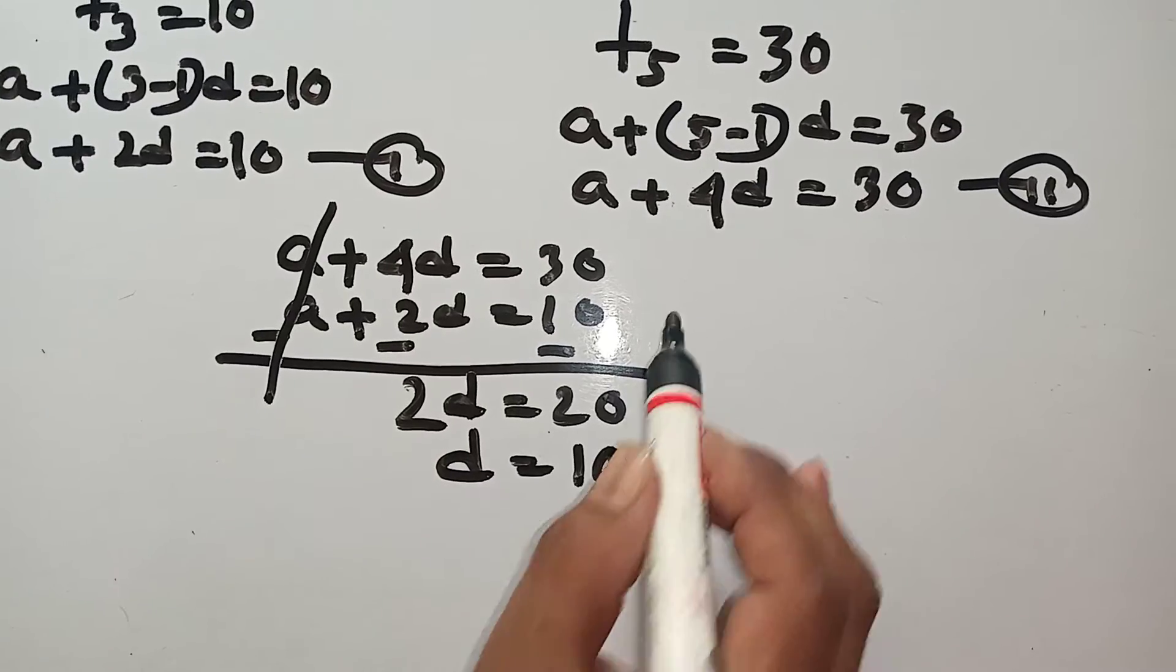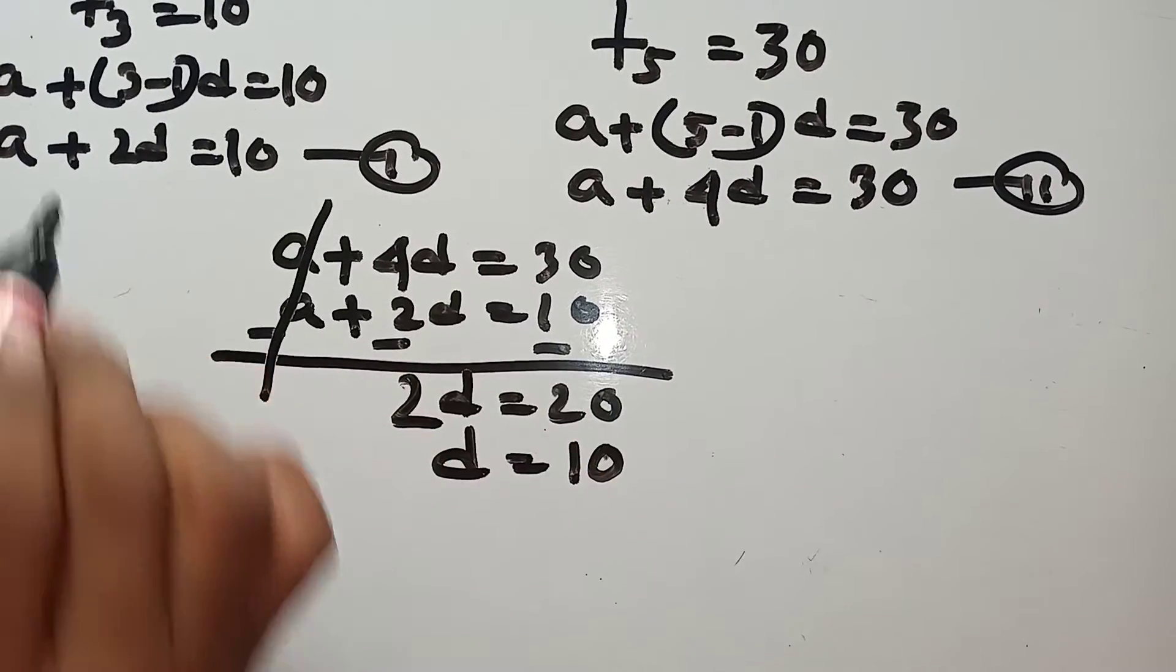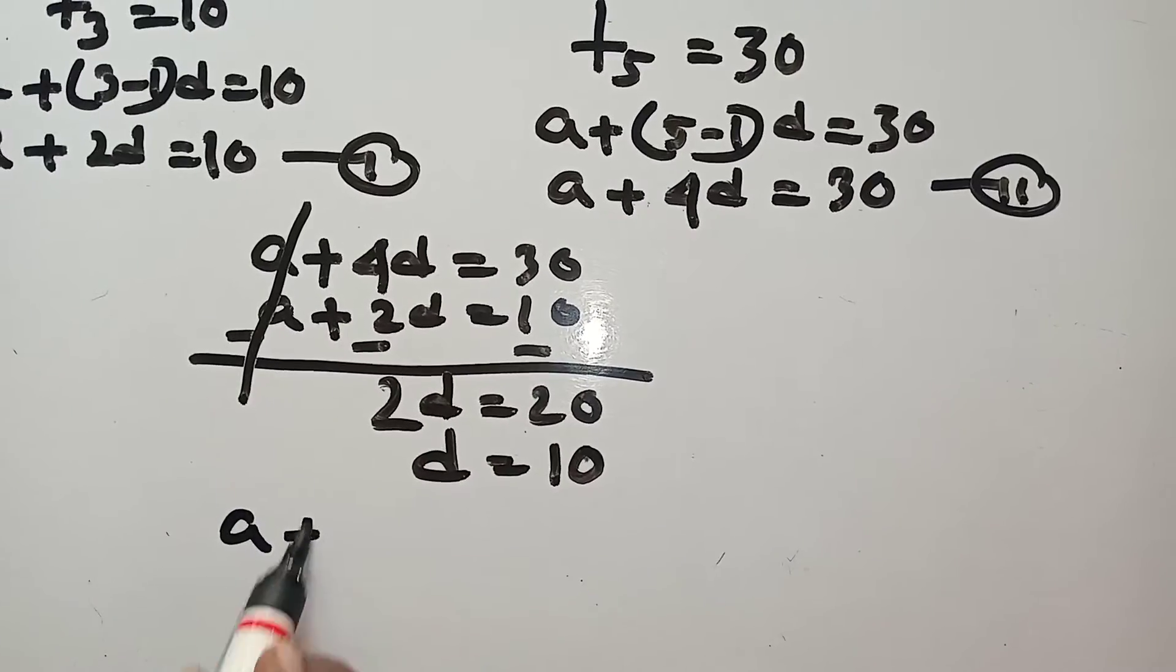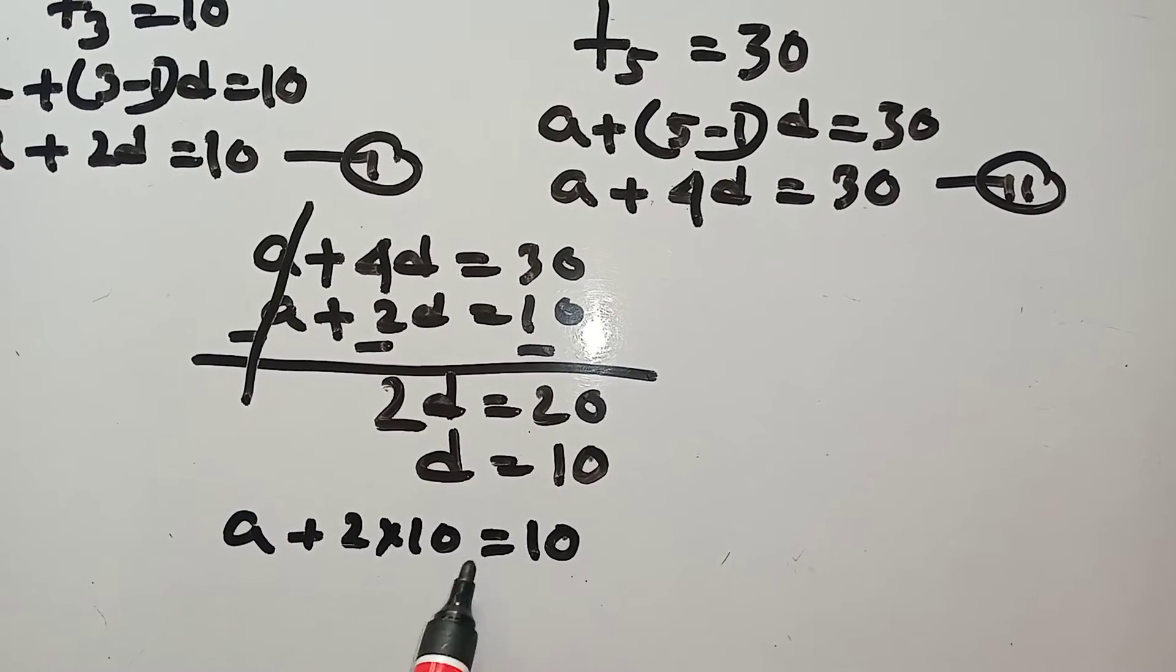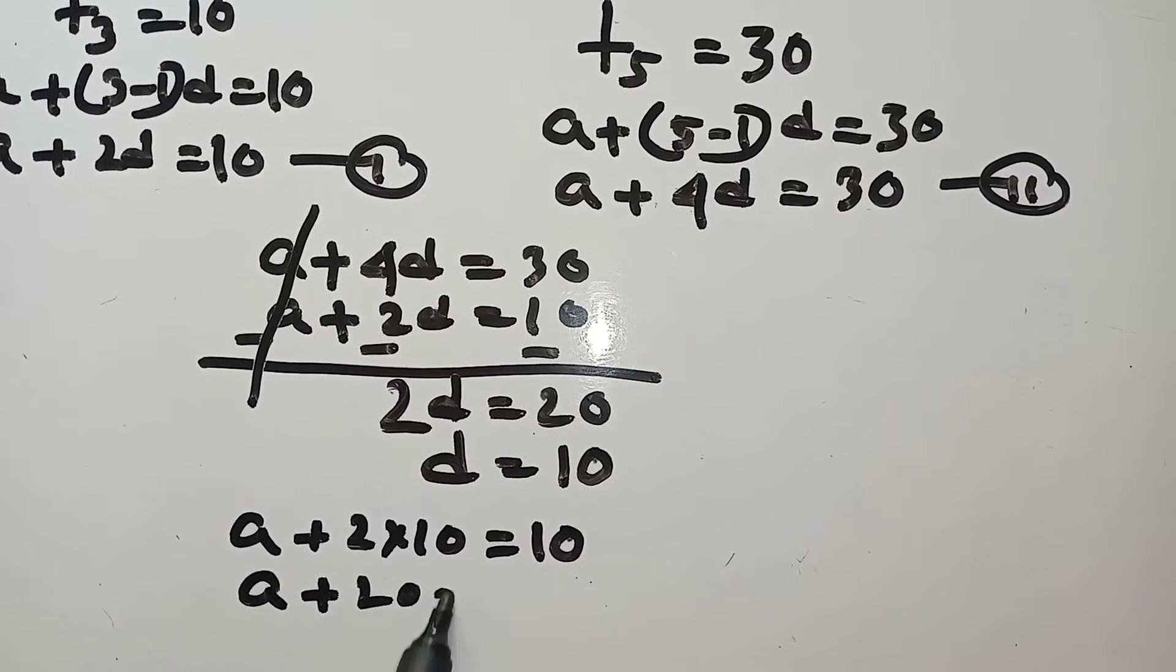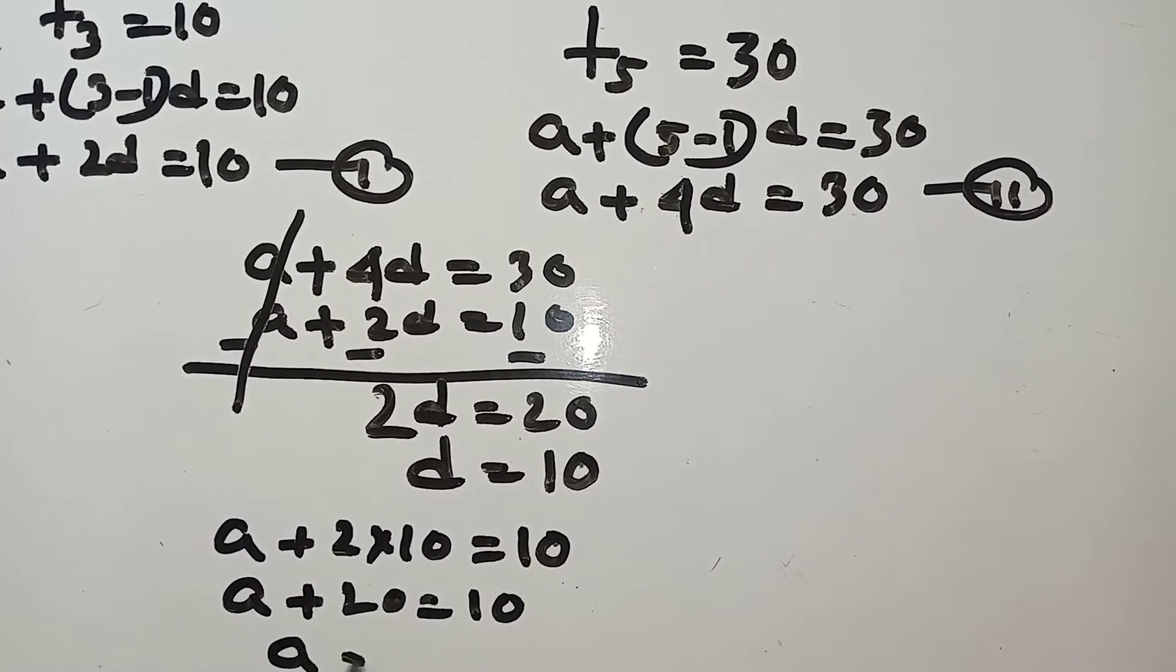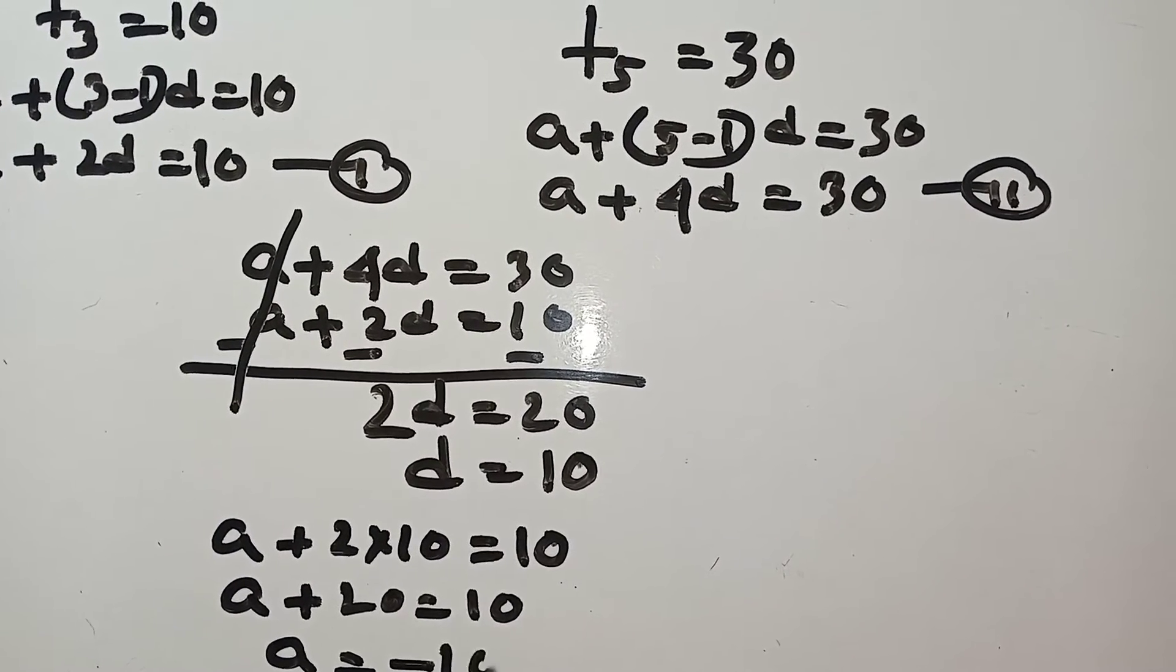In equation 1, A plus 2 into 10 equal to 10. A plus 20 equal to 10. A equal to minus 10.